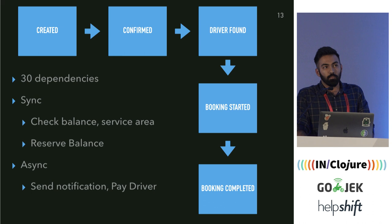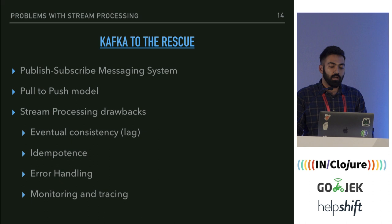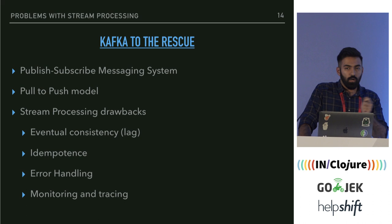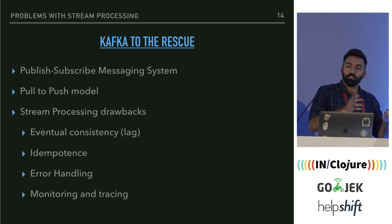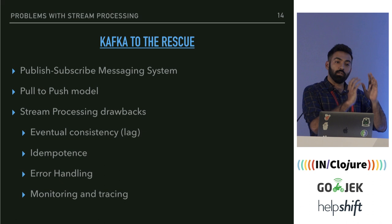What we wanted to solve was removing the 30 dependencies that Ride Service depended on so it could be maintained on its own and improve uptime. Our initial stab at it was Kafka — a publish-subscribe messaging system. We moved from a pull model to a push model: instead of services asking Ride Service for state changes, every time there was a state change, Ride Service would publish a message on Kafka and anyone who wanted that data would just read it off of Kafka.